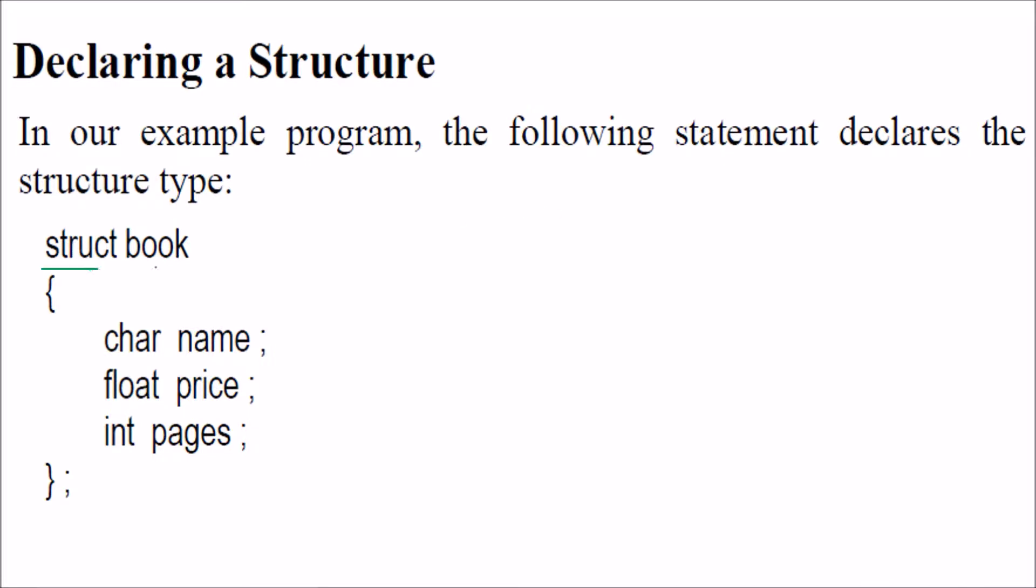We have a struct here and this is the name of the structure. Then we have three entities here. You can give any entities, pointers, or arrays. Then you end it with a semicolon. Please understand, you end with a semicolon.